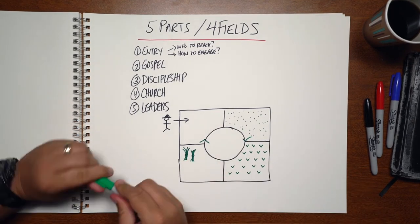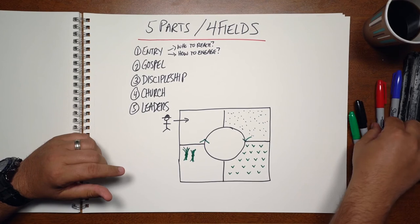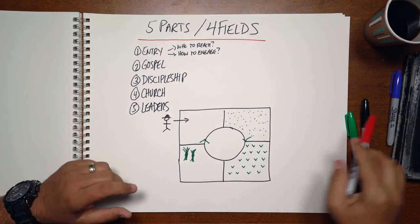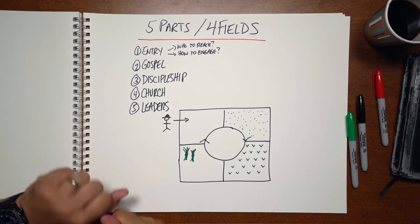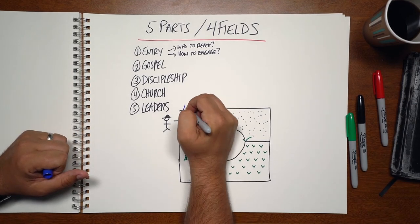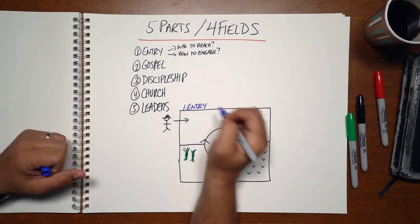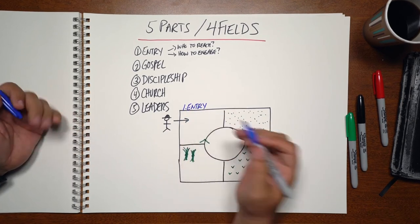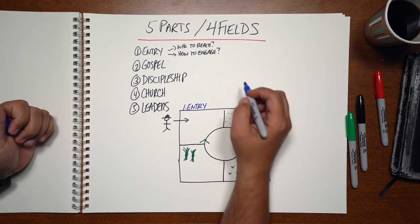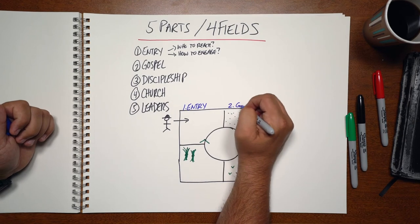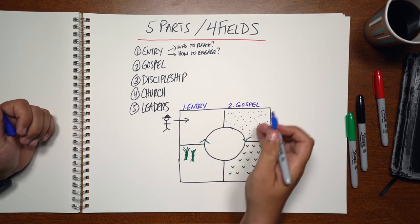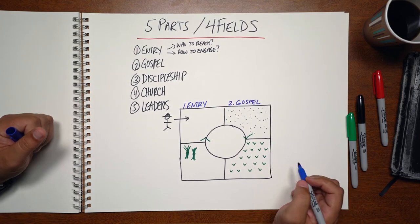As we see this farming illustration, we take the five parts and fit them in here. The empty field represents entry — where's the lostness, where there's nothing growing, and how do we engage them? The seeded field represents the gospel — how do we communicate the gospel and sow seed among lostness?